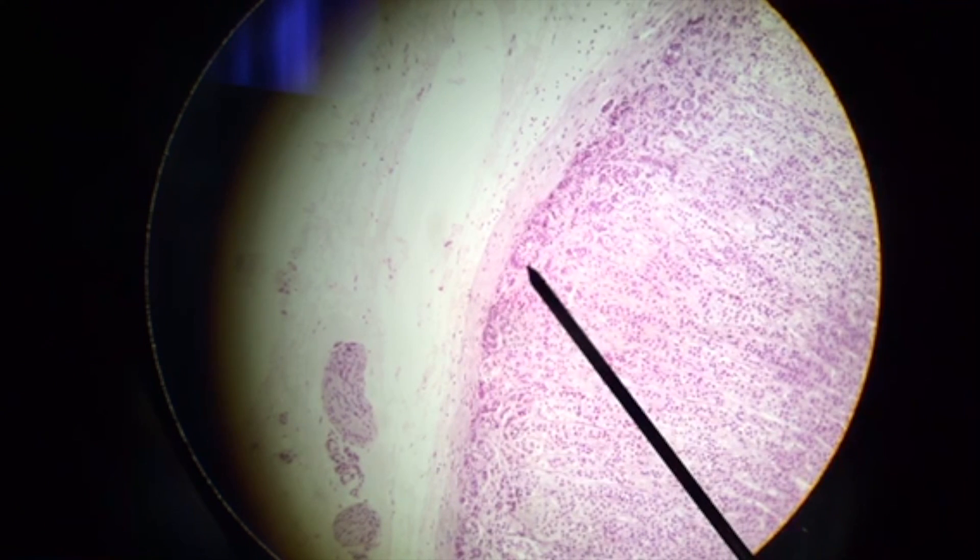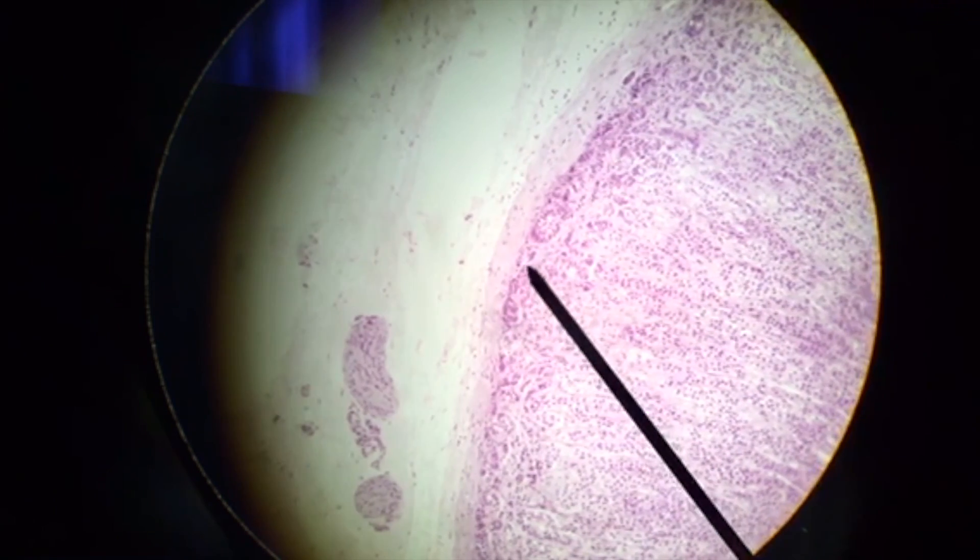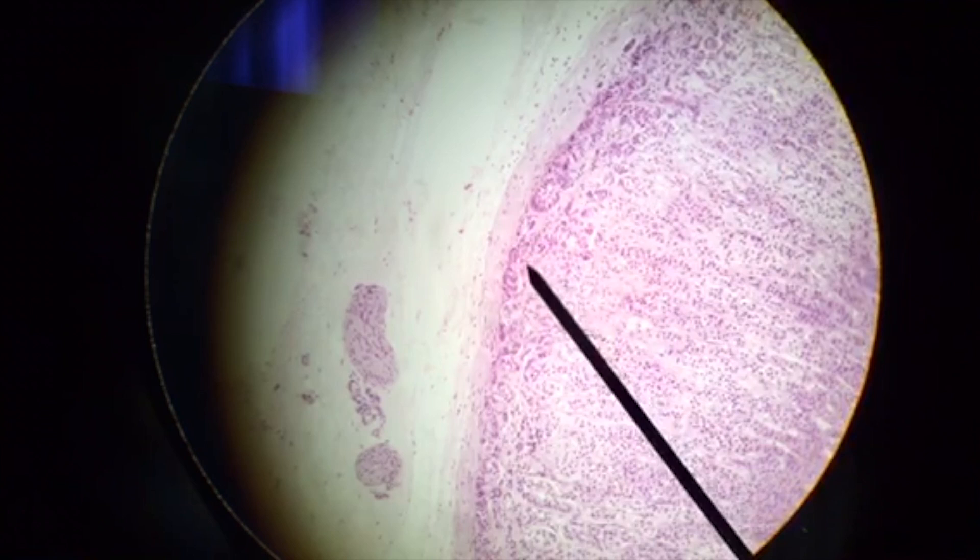Here we go. The pointer is pointing at the first outermost zone. It is known as the zona glomerulosa, or cluster of balls. It is the thinnest zone within the cortex. Its job is to make mineralocorticoids or aldosterone.